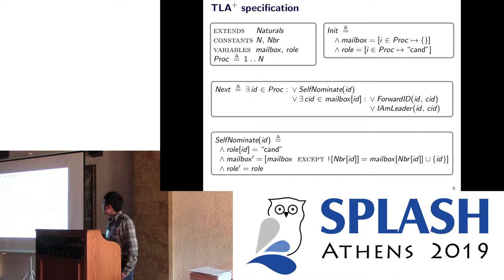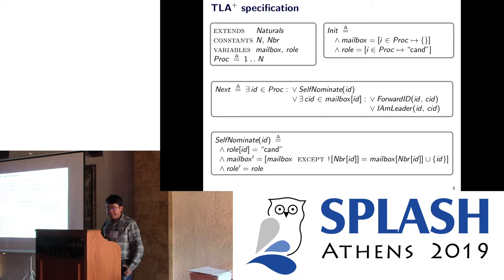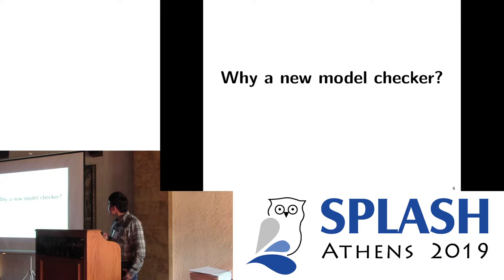Here is our spec. First we declare the library, the constants, and the variables. We have two constants: the number of processes and the topology of the network. Then we define the formula for the initial state. The middle part is about the transition formula. In one step a process can do one of three actions: self-nominate, send a message, or become a leader. This formula means if process A is a candidate it can send a message to a neighbor.